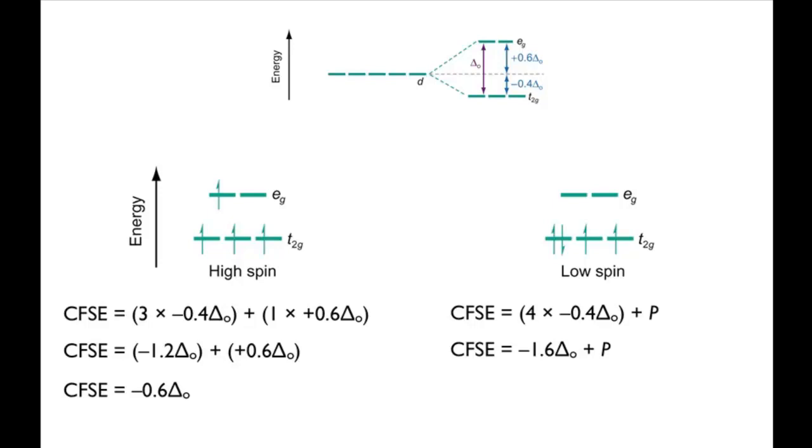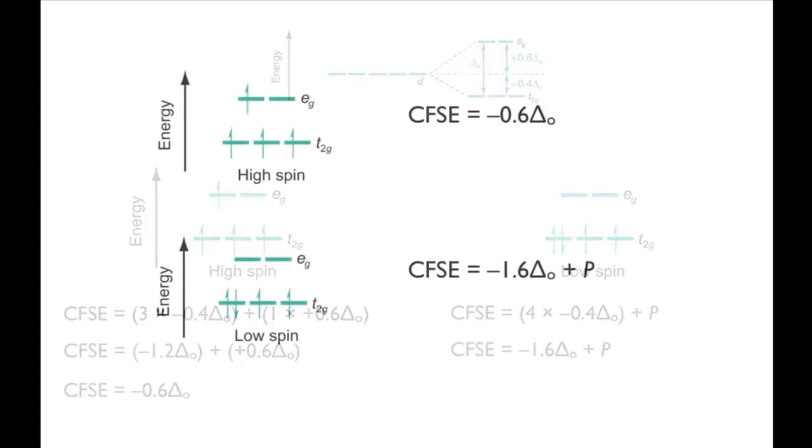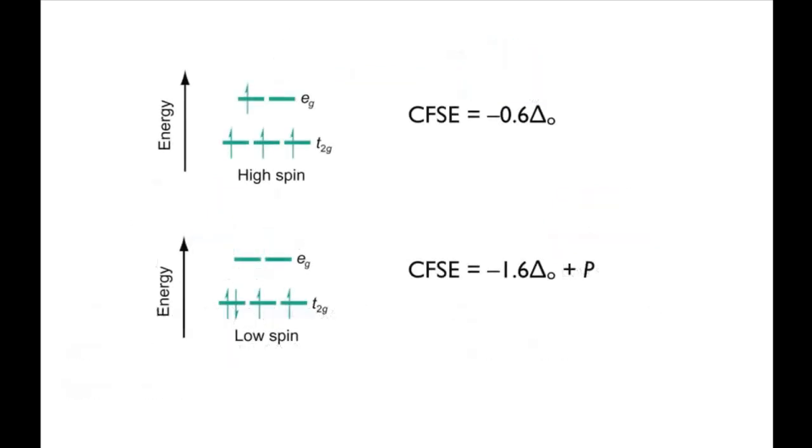Which of these possibilities is favored depends on the relative magnitudes of ΔO and the pairing energy P. If P is greater than ΔO, the electron will go into the EG orbital, giving a high spin complex. In contrast, if ΔO is greater than P, the fourth electron will go into the T2G orbital, giving the low spin complex.